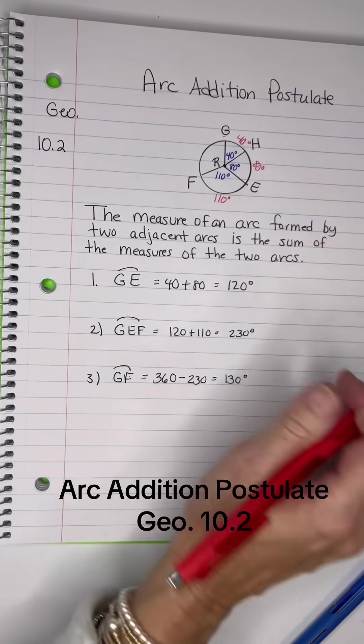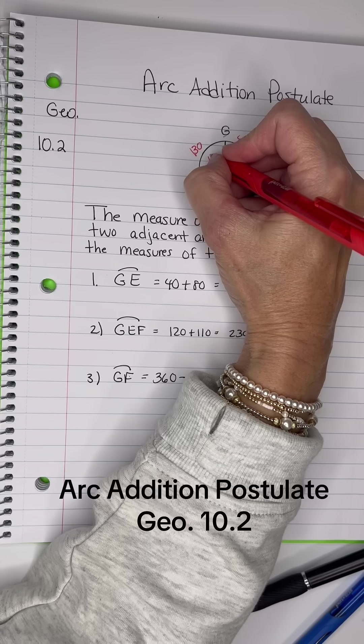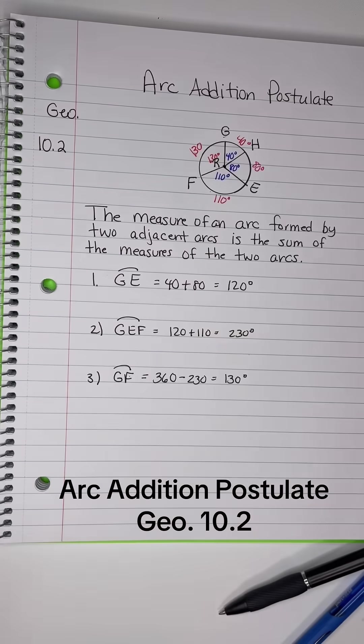So here I have 130 degrees for the arc, and that means 130 degrees will also be that central angle.